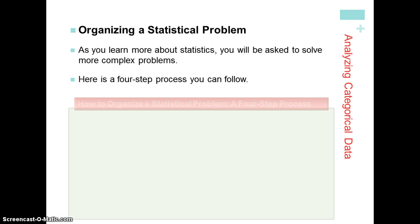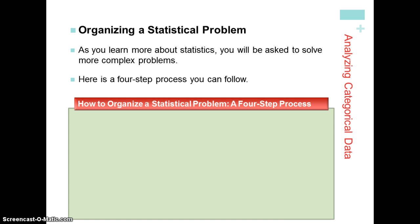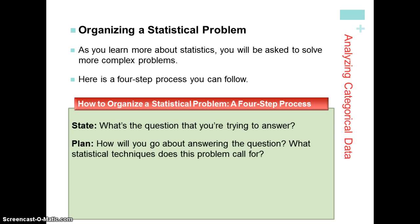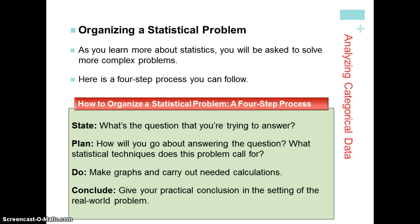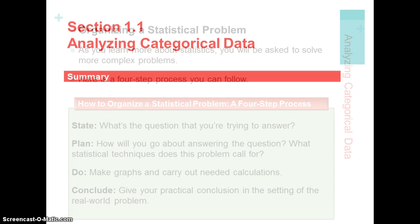When we organize a statistical problem we're going to use what we call the four-step process. State: what is the question you're trying to answer? Plan: how are you going to approach it — what procedures, graphs, and calculations will you use? Do: create the graphs or perform the calculations needed to answer the question. Conclude: put it all together and justify your answer with reasoning, graphs, and numerical evidence from the 'do' step to summarize everything in the problem.